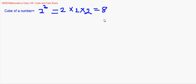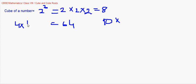For the number 10, you cannot find a natural number whose cube is 10, so 10 is not a cube number. Similarly, 64 can be expressed as 4 × 4 × 4, which is 4 to the power 3, so 64 is a perfect cube number.